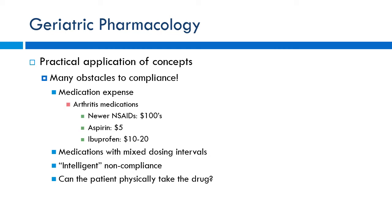There are many obstacles to compliance. Medication expense is one of the biggest — the newest arthritis medication won't help if patients can't afford it. Aspirin is five dollars, ibuprofen is ten to twenty. Look at programs like Publix's free drug list or Walmart's $4 list — that's often the bread and butter of general care prescribing. Be careful with mixed dosing intervals. If you can consolidate to taking two pills twice a day rather than different drugs on different schedules, compliance improves significantly.